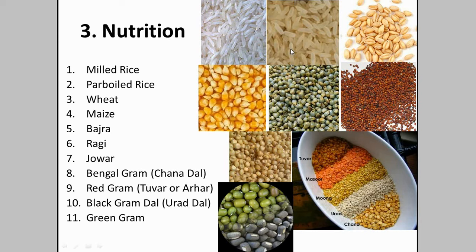Among cereals, rice has more lysine compared to others. For wheat, you have to mention its nutritive value — more or less around 340 kilocalories, similar to other cereals. Wheat is slightly superior because of its fiber content and higher calcium and mineral content compared to rice.